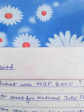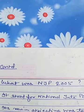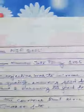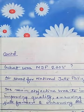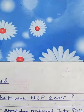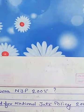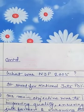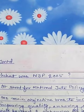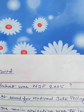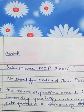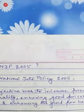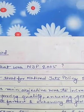Next question: what is NJP 2005? NJP literally means National Jute Policy 2005. It can be asked as a three marks question, so write the full form first. NJP means National Jute Policy 2005. Its main objective was to increase the productivity by improving the quality.